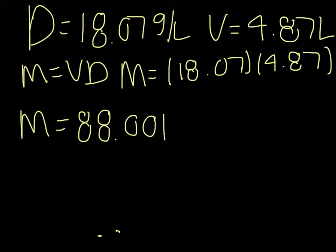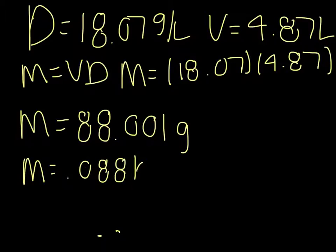But we don't want the answer in grams we want in kilograms. So if you move the decimal 3 to the left you get an answer of .088 kilograms. But that is only 2 sig figs and we want 3 sig figs because the lowest number of sig figs in the givens is 3. So the answer is m equals .0880 kilograms.